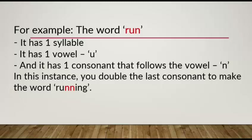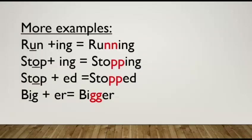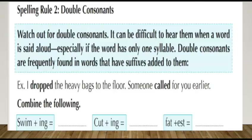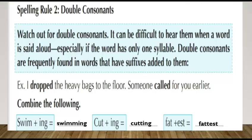For example, the word 'run' has one syllable, one vowel U, and one consonant following the vowel. So you double the last consonant to make 'running.' Examples: 'run' → 'running'; 'stop' → 'stopping' and 'stopped'; 'big' → 'bigger' — doubling G; 'swim' → 'swimming' — doubling M; 'cut' → 'cutting' — doubling T; 'fat' → 'fattest' — doubling T.